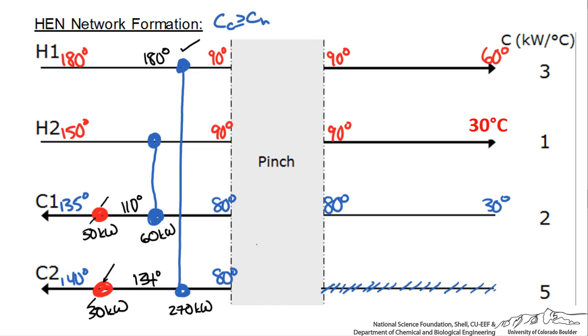As you can see, adding up the exchangers on the left side we have 80 kilowatts, which is what we had calculated before as our minimum energy requirement target for the hot side.